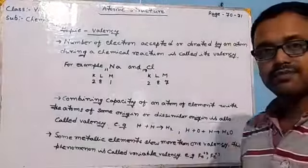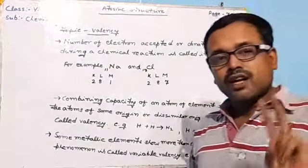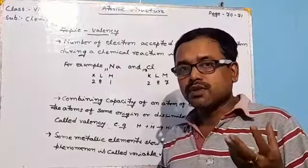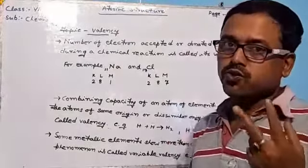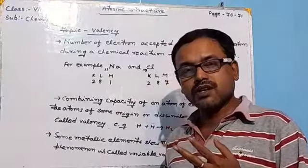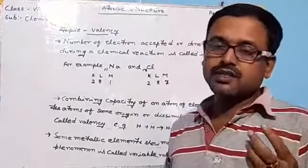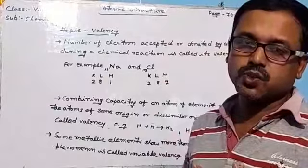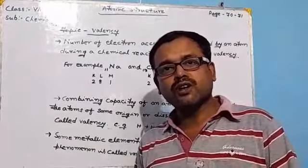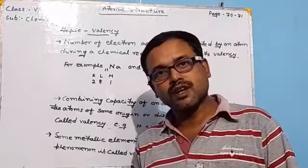For example, iron has two valences: valency two and valency three. Copper also shows two valencies: valency one and valency two. Mercury also shows two valencies: valency one and valency two. So there are some elements which show more than one valency, and this phenomenon is called variable valency.